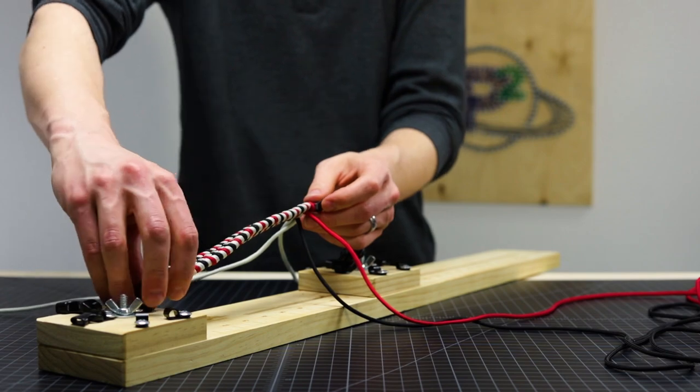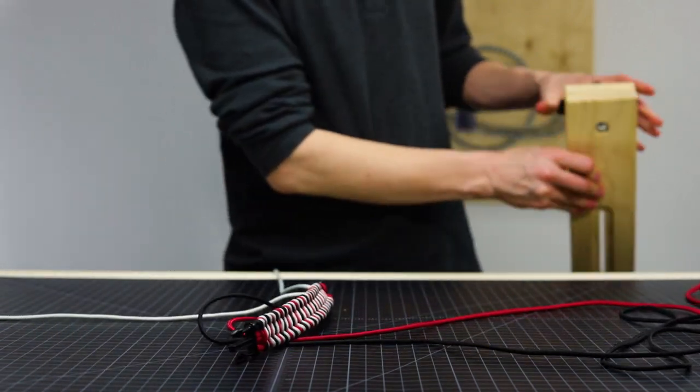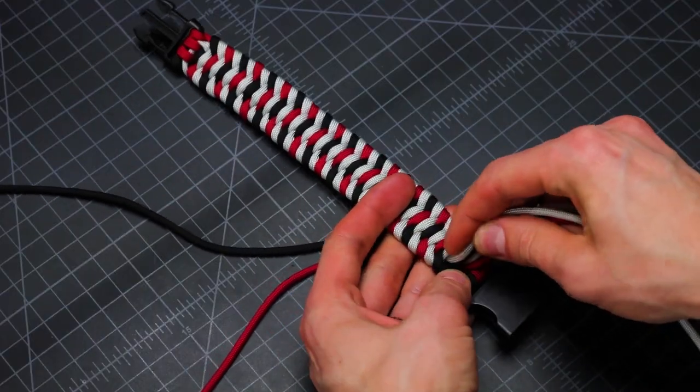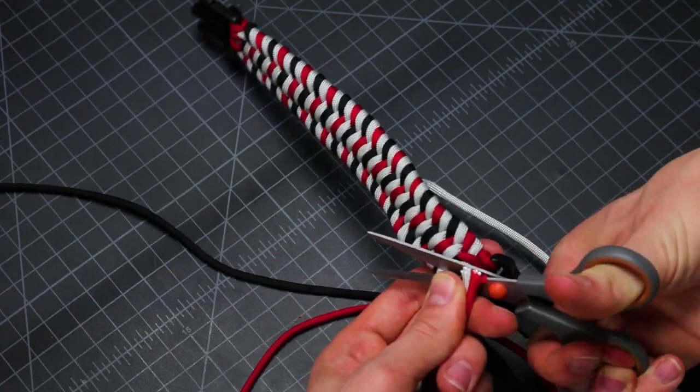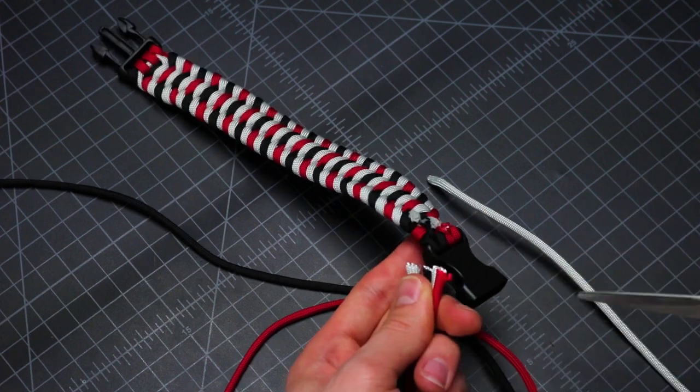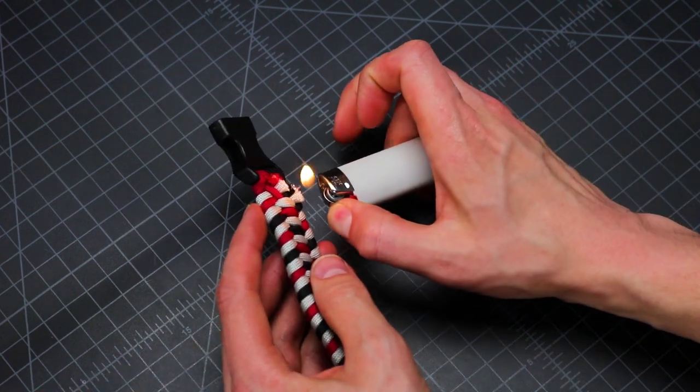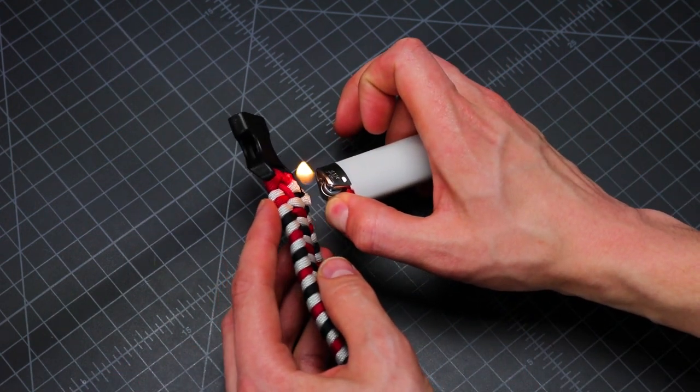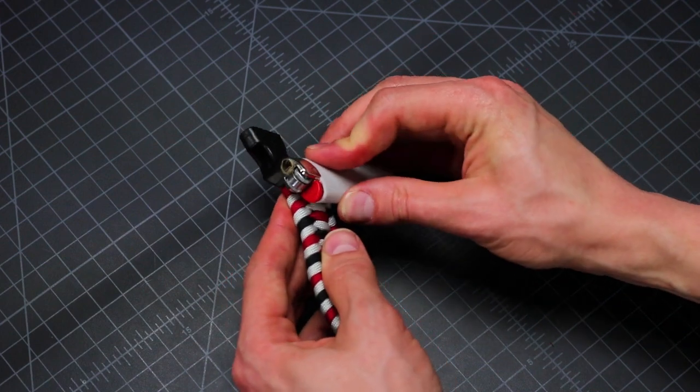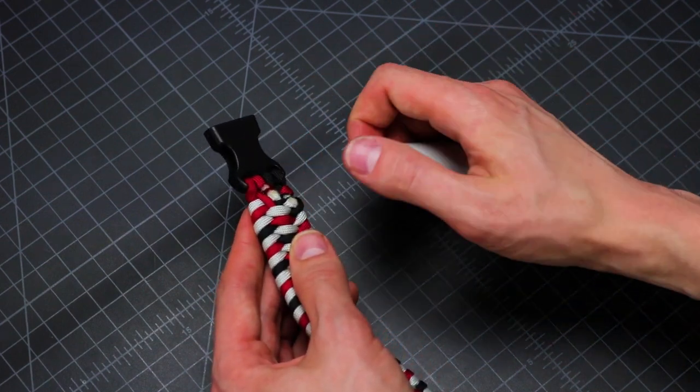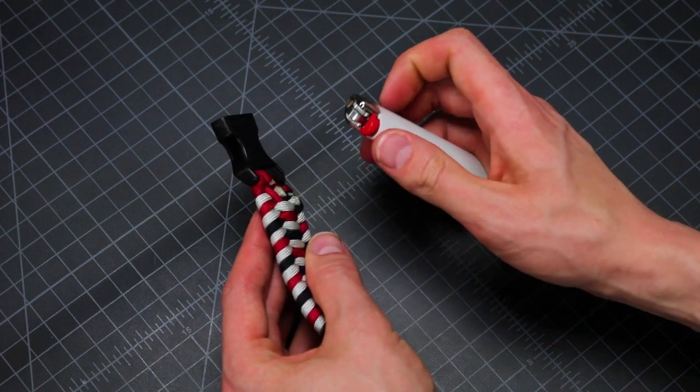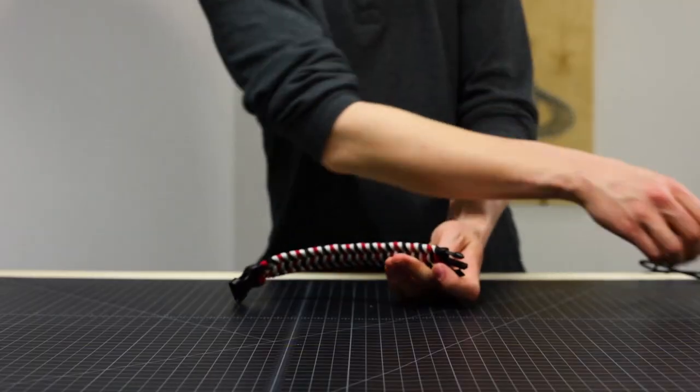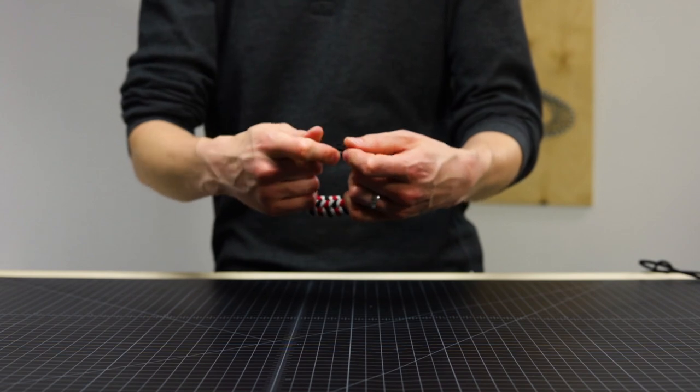So now we'll take it off of our jig. Set that aside. And then we're just going to clip off the ends on the bottom side. And then melt those with the lighter. Push them flat against the bracelet. And now that's all done.